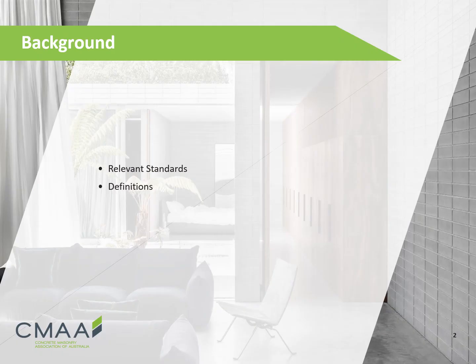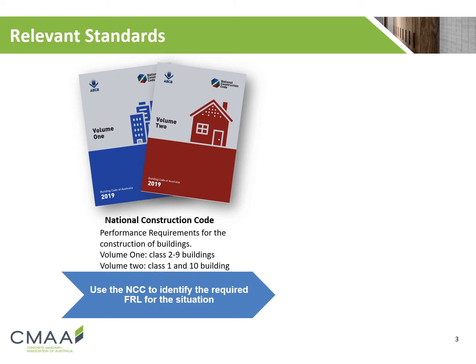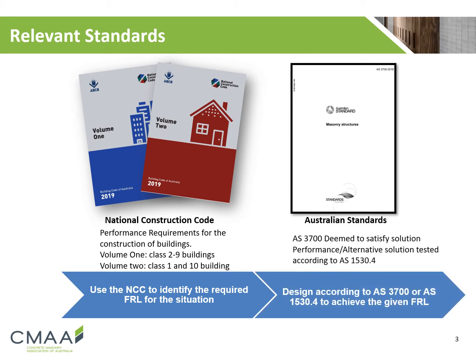Before we dive into our presentation, we're quickly going to look at some background information that will be of use — the relevant definitions and standards for FRL design of concrete masonry walls. The National Construction Code volumes 1 and 2 are used to identify the required FRL for a given situation. Volume 1 covers building classes 2 to 9 and volume 2 covers building classes 1 and 10. AS 3700 outlines the design procedures used to achieve the required FRLs from the NCC. We will not be covering the use of AS 1530.4, which covers performance and alternative solutions to FRL designs, in this presentation.